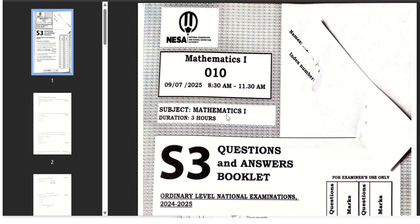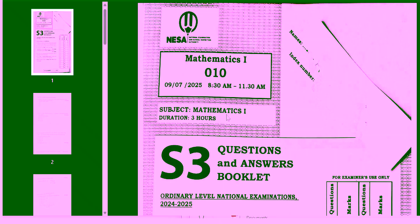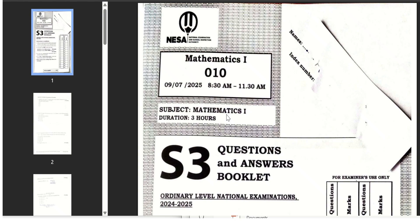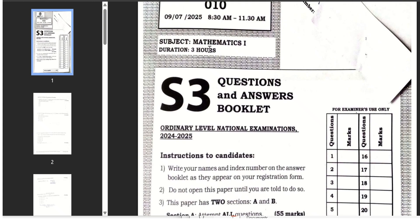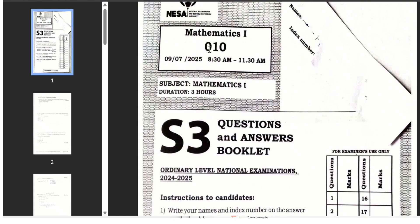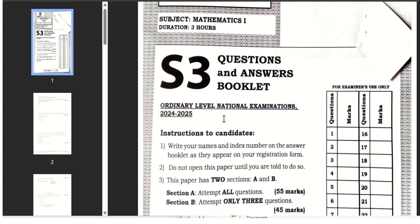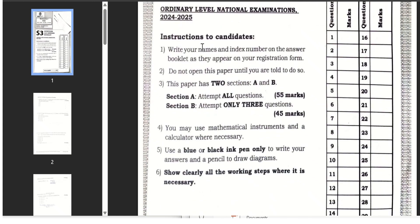This is national examination and school inspection. National exams by NESA. You see it's 2025, they did this exam in this year. This is the mathematics senior three ordinary level. First you have to read the instructions.